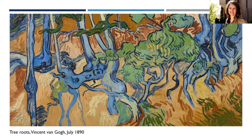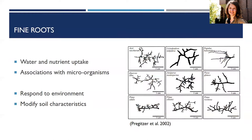The roots Van Gogh painted are more woody structural roots, and those are not the roots I was interested in for my dissertation. I was interested in fine roots — the smallest roots of the root system, really at the millimeter scale. These roots are also ephemeral, meaning that after a certain period of time they're shed, just like leaves on a tree. But unlike leaves, their production season and death season are variable, and their lifespan can vary from a few days up to a few years.